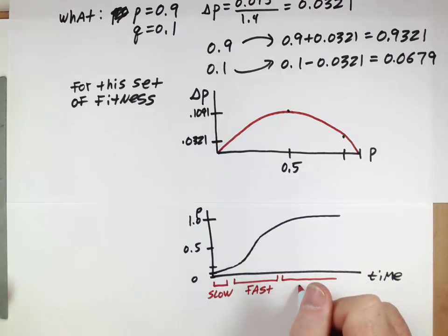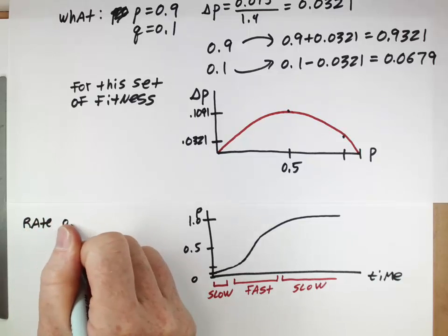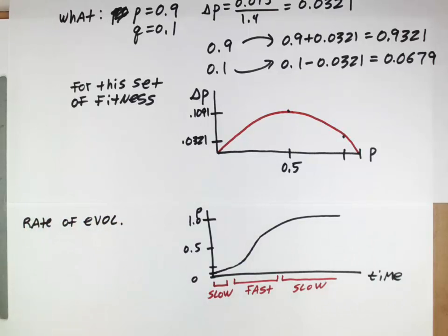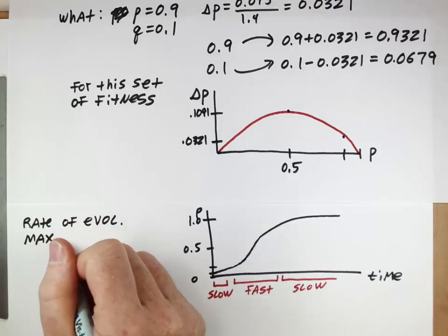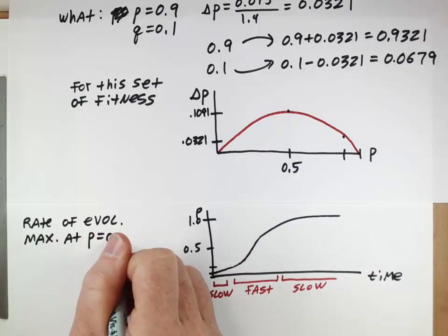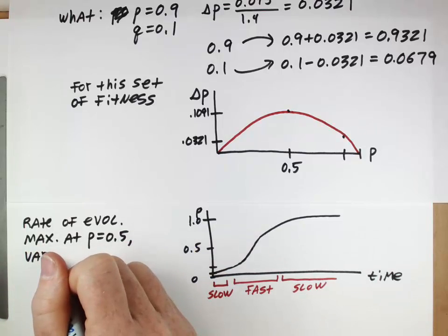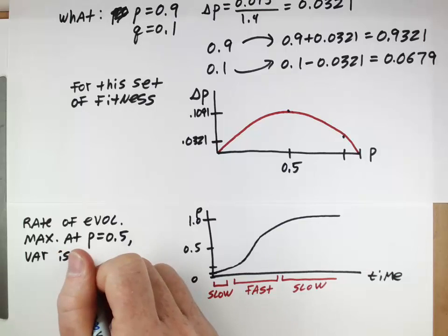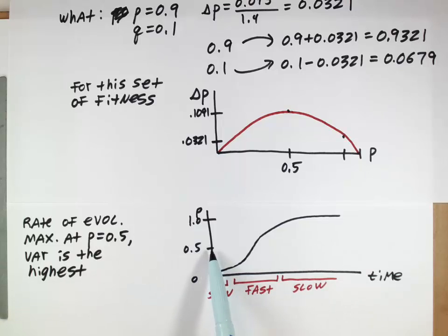The interesting result from looking at this is that the rate of evolution, which is something that's a fundamental idea that we're interested in, the rate of evolution is maximized at p is equal to 0.5, and p equal to 0.5 is really another way of thinking about that's when the variation is the highest. If you think about what a population looks like, p of 0.5 means both alleles are equally common.